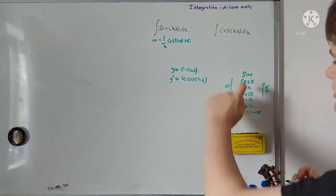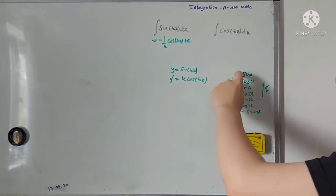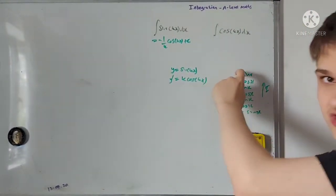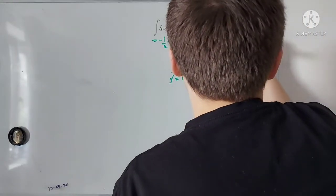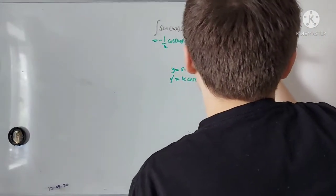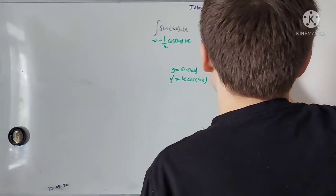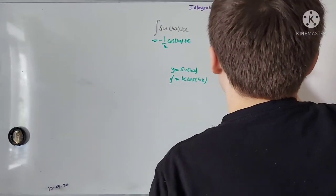Now with cosine, if I integrate cosine of kx, I get back sine of kx — which is nice, because I don't get the minus sign in front. It's quite nice to work with when you get one of those.